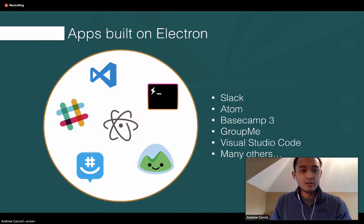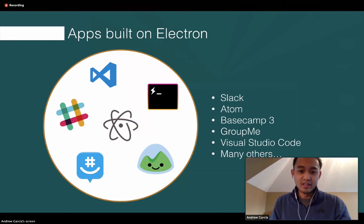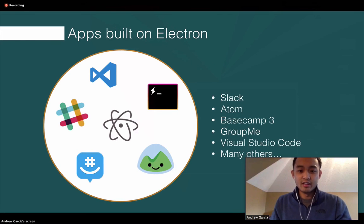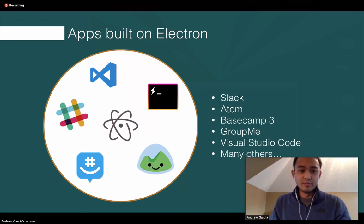Just a couple of apps built on Electron: Slack, the messaging application for teams, was built on Electron. My favorite text editor, Atom, is also built on Electron. A couple of others include Microsoft Visual Studio Code, GroupMe, Basecamp, and Hyperterminal — it's a pretty long list. So that's it, that's an introductory look at Electron. Thanks for listening.